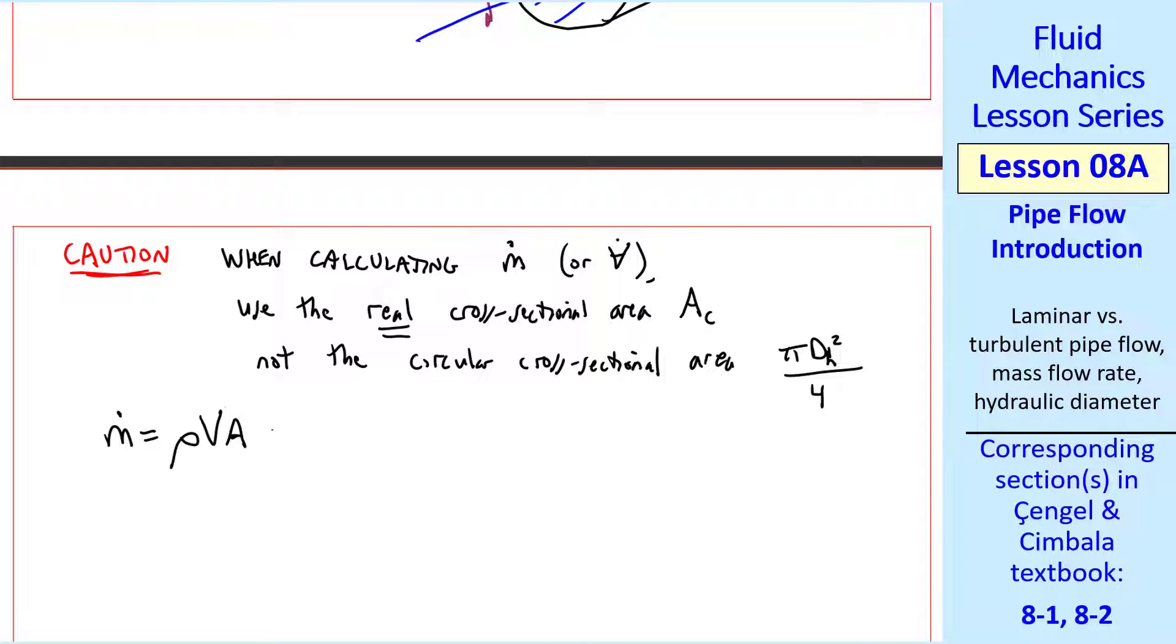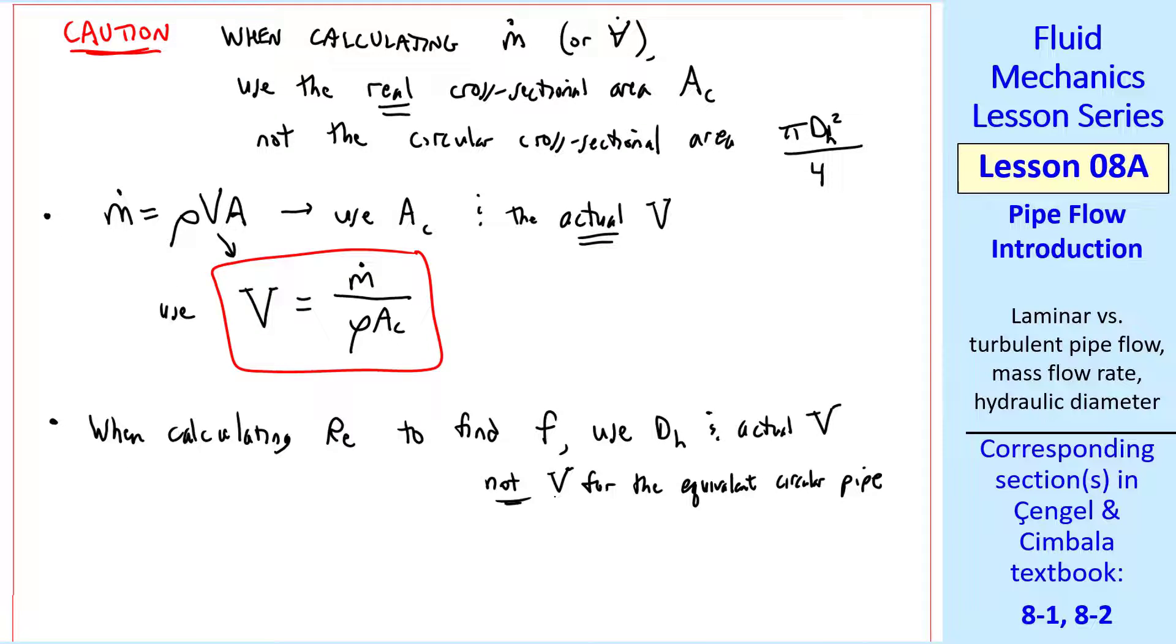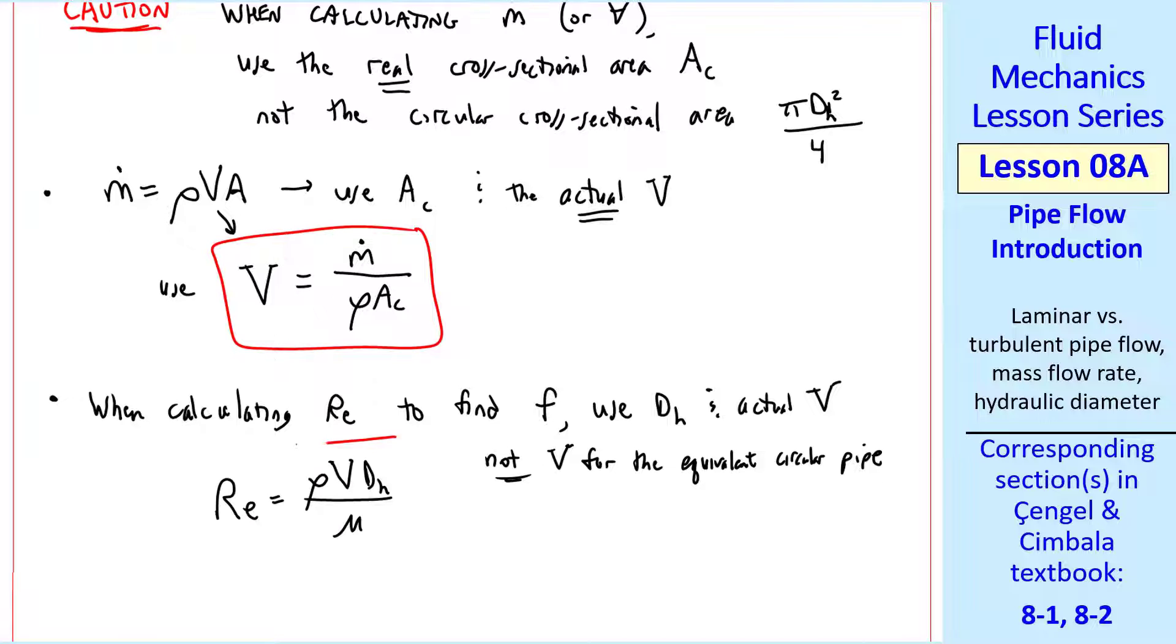Mathematically, when we use M dot equal rho VA, we use AC, the actual cross-sectional area, and the actual V, which is the actual average speed through the non-circular pipe. So when you have a non-circular pipe and you know mass flow rate, you calculate V as M dot over rho AC. But when you're calculating Reynolds number to find Darcy friction factor, for example, we use DH and the actual V, not V for the equivalent circular pipe. RE is rho V DH over mu.